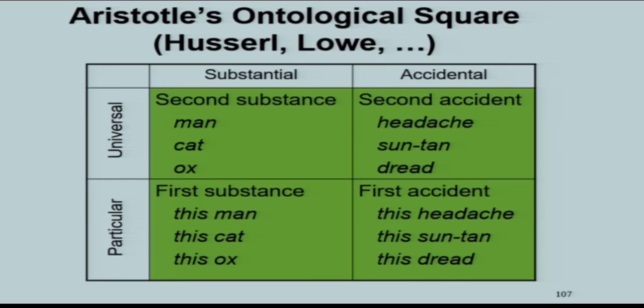And then there are people who want to have it all. Aristotle, Husserl, E.J. Lowe, I want all of this, too. You see that this is predication in the category of substance. The left-hand column tells us that this man instantiates the universal man. And going from the bottom left to the top right is predication in the category of accident. This man has a headache, or this man has a suntan.